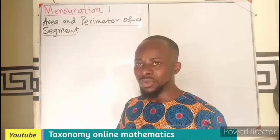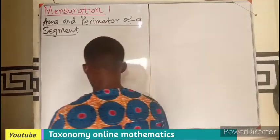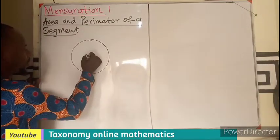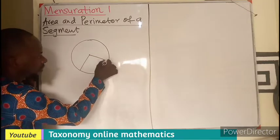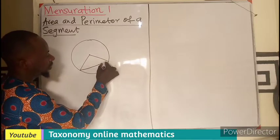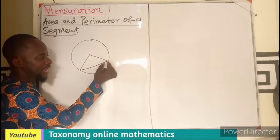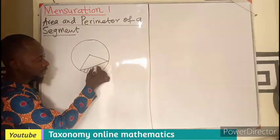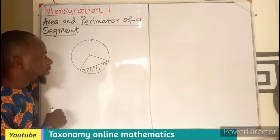We started mensuration one. This is the second episode. So, if we have a circle, then the center. If I have this and this, let's say I have this. We say a segment is area bounded by a cord and an arc. So, this region is what we are looking for. That is the segment.